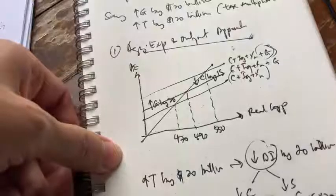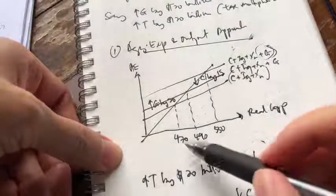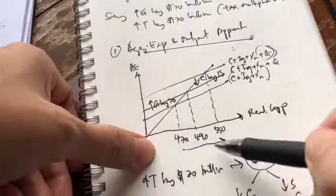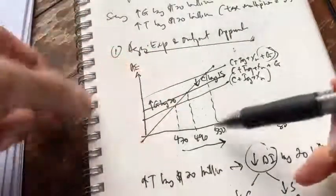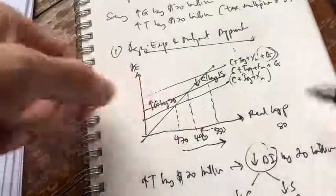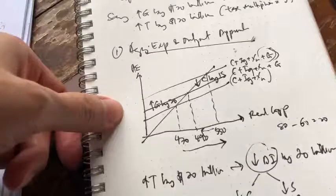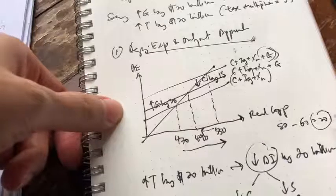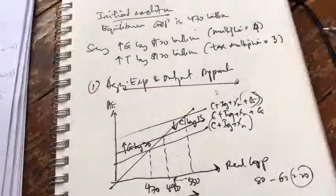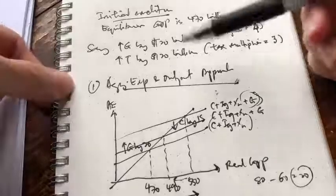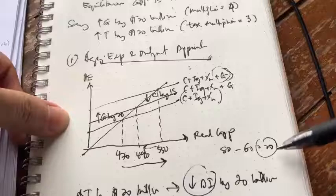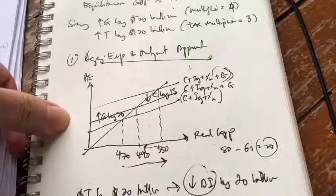Here's the interesting part. First, GDP went from 470 to 550 — a change of 80 billion. Then from 550 it went back to 490 — a change of 60 billion. So 80 minus 60 gives a net effect of 20 billion, which is exactly the same as the changes in G and T. This is what balanced budget multiplier means: given an equal change in both G and T, it leads to exactly the same amount of change in real GDP.